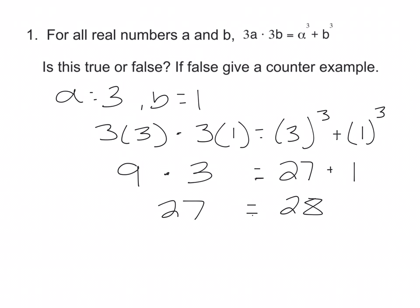So right here, 27, we know, is not the same thing as 28, so this proves it false. This is our counterexample here. What happens if you had an example that was true? Well, that means you have to try again. You have to pick different numbers.